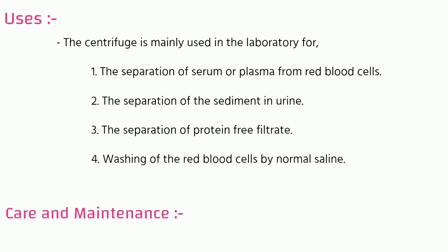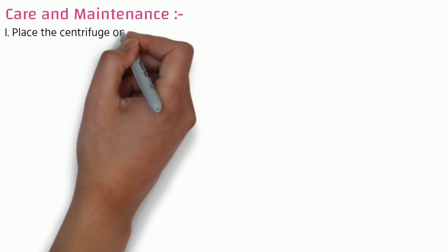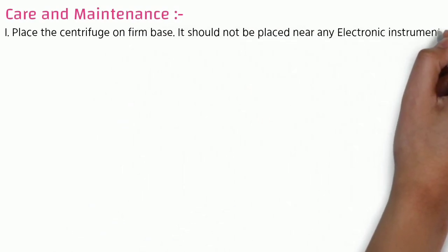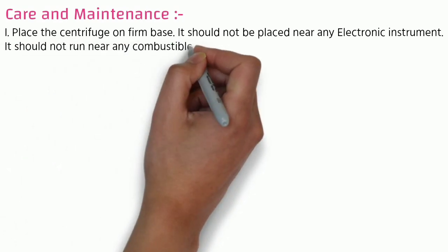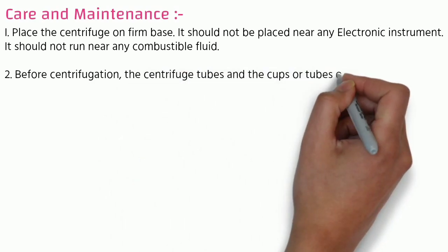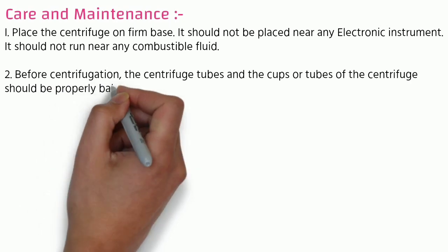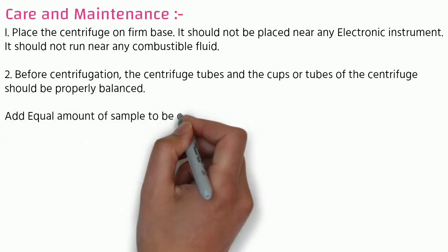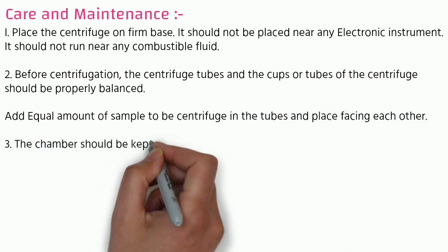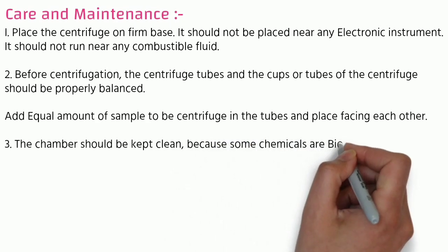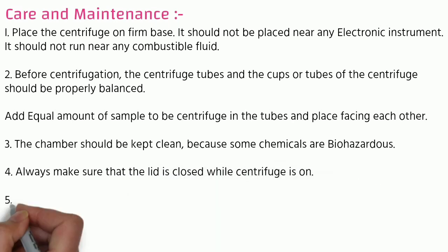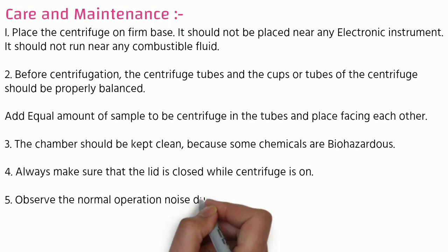For care and maintenance of the centrifuge: place the centrifuge on a firm base; it should not be placed near any electronic instruments; it should not run near any combustible fluid. Before centrifugation, the centrifuge tubes and cups should be properly balanced — add equal amounts of sample to tubes and place them facing each other. The chamber should be kept clean because some chemicals are biohazardous. Always make sure the lid is closed while the centrifuge is on.